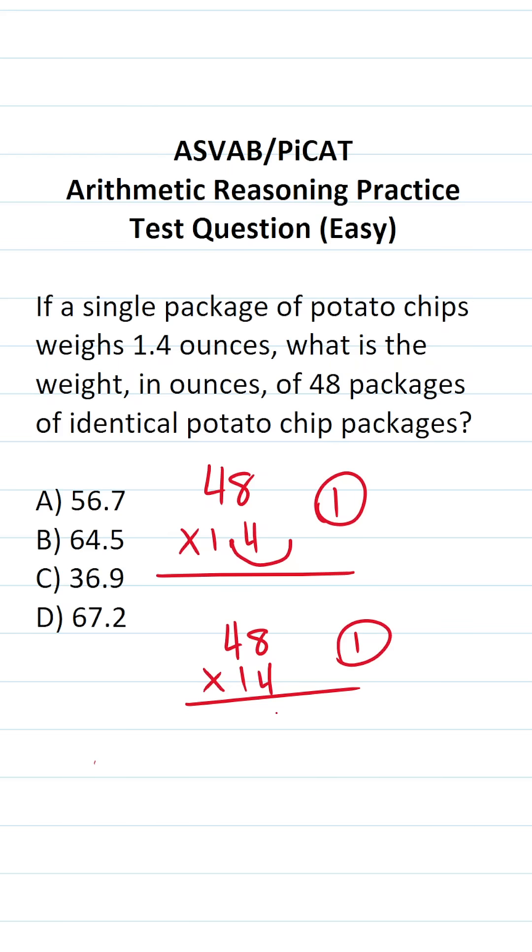8 times 4 is 32, carry a 3. 4 times 4, 16, 17, 18, 19. Before we start multiplication with this 1, we have to bring in a 0 placeholder. 1 times 8 is 8. 1 times 4 is 4.